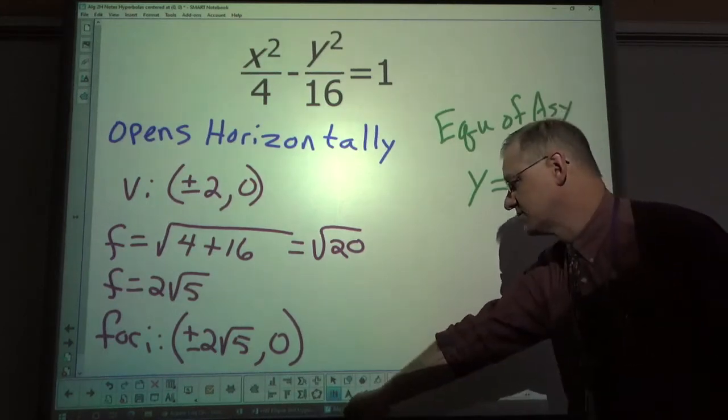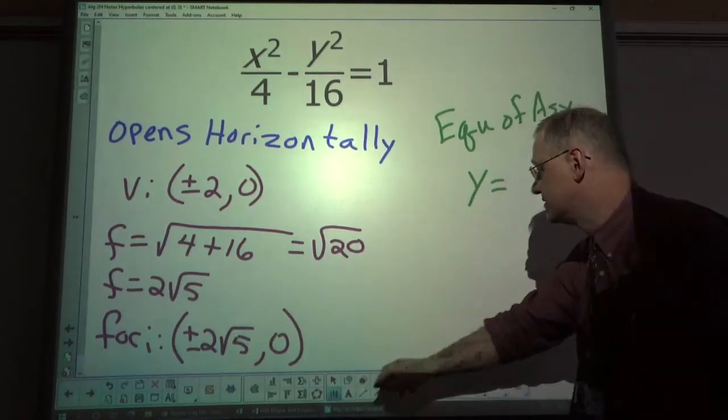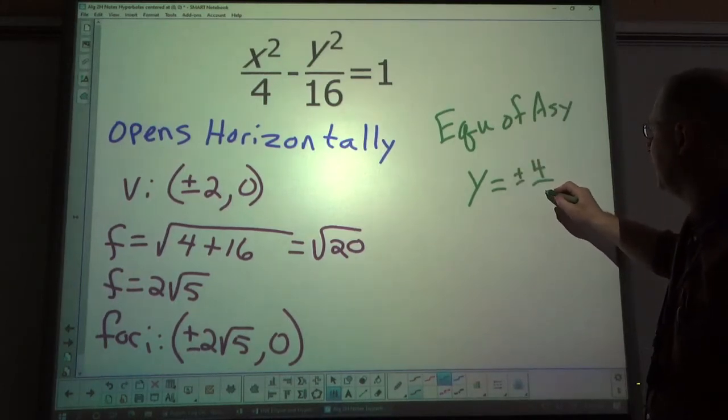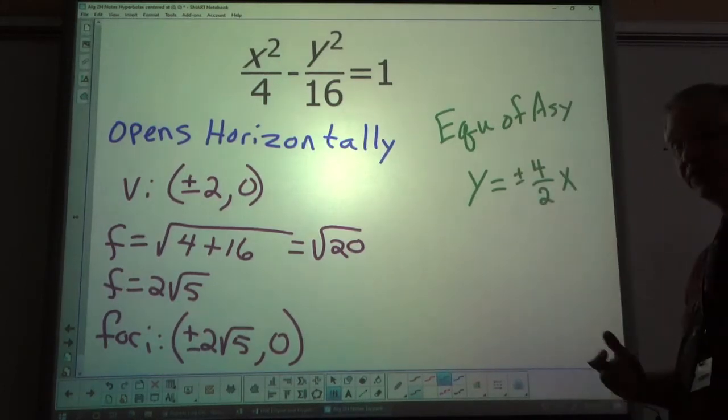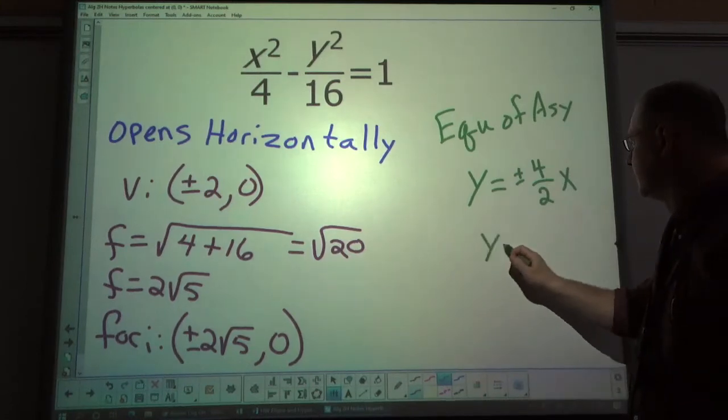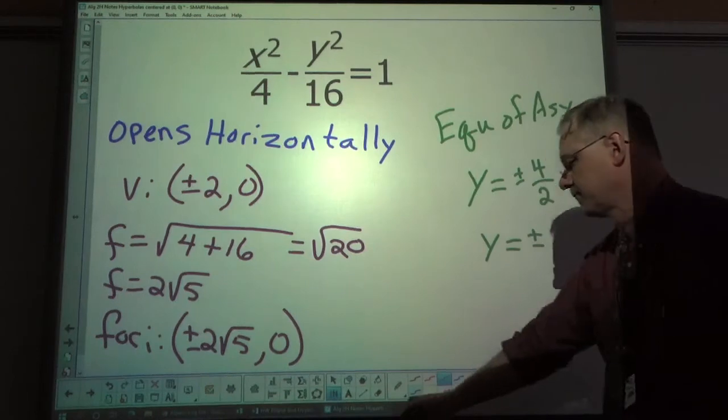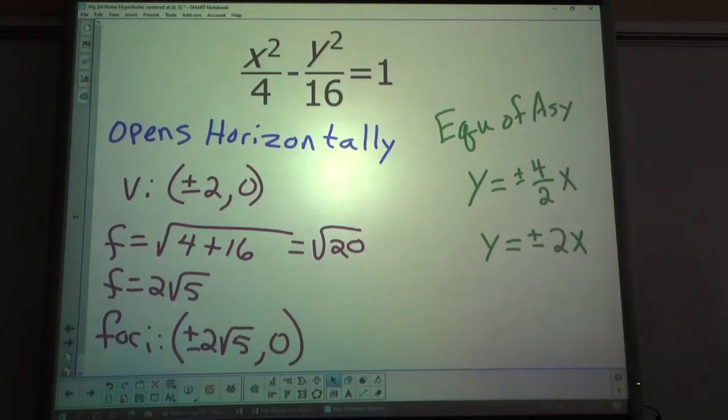The equations of the asymptotes is y equals, plus minus. I forgot the plus minus sign, easy to do. b over a x. Now, you really should simplify that, so plus or minus 2 x.